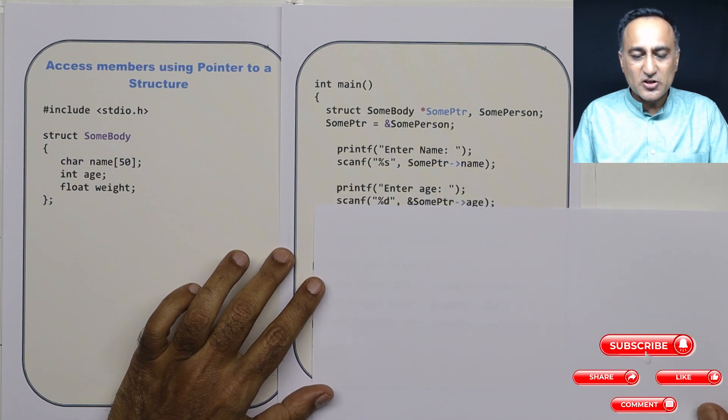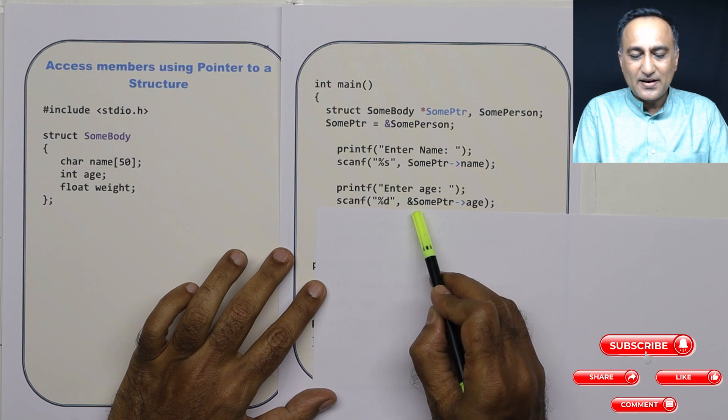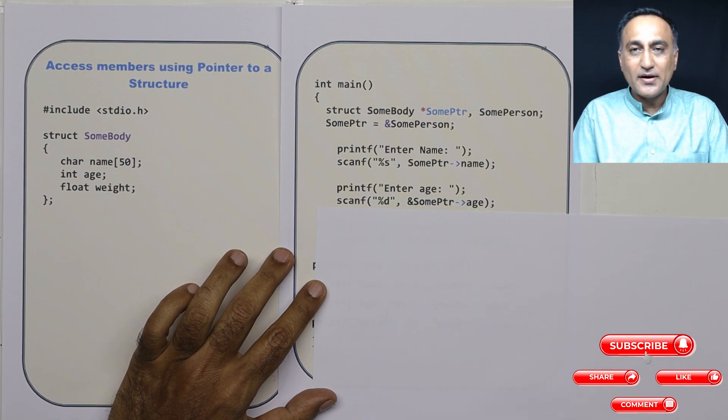Enter the age. Age is, again, since we use address for age, it is address of some pointer arrow age.